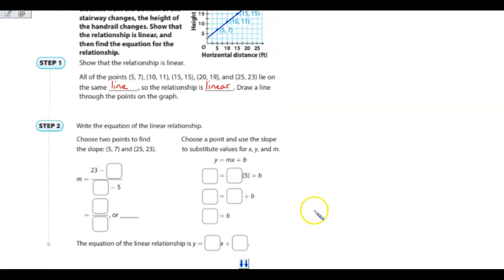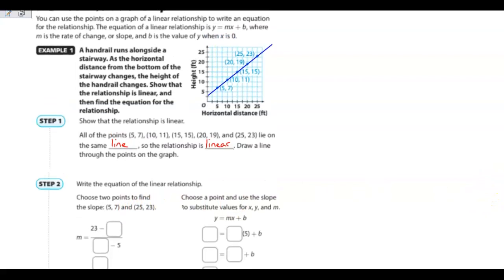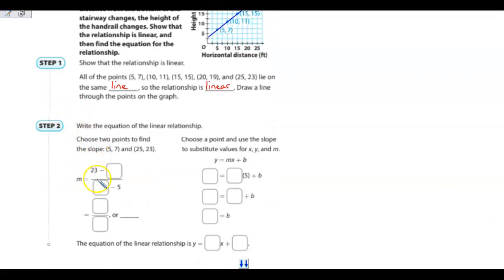We can write the equation by using any two points to find our slope, and they're using 5 and 7, and then the 25, 23. So we're going to take the points from this line, and we're going to find the slope. So we have 23 minus 7, and 25 minus 5.